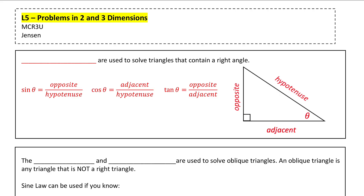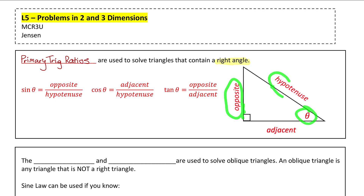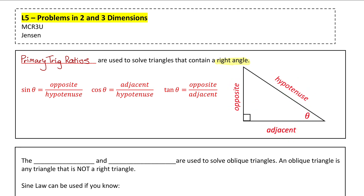Let me start by reviewing the tools you can use to solve for sides and angles in a triangle. The primary trig ratios are used to find sides and angles in a triangle that contains a right angle. The three primary trig ratios are sine, cosine, and tangent of a reference angle. Sine equals opposite over hypotenuse, cosine equals adjacent over hypotenuse, and tan equals opposite over adjacent — summarized by the acronym SOHCAHTOA.